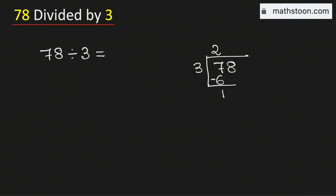Now see that 1 is less than 3, and that is why we need to bring down this number 8 here. Now 3 times 6 is 18. Subtract, we get 0.